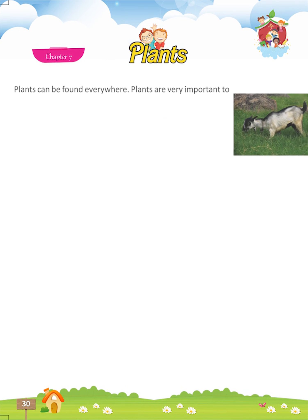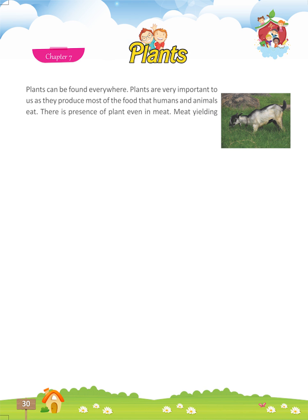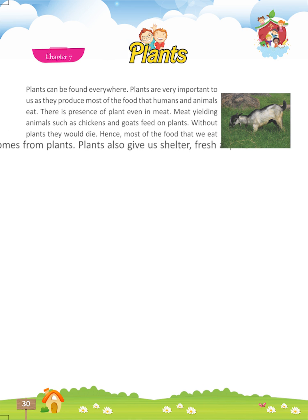Let's start chapter 7: Plants. Plants can be found everywhere. Plants are very important to us as they produce most of the food that humans and animals eat. There is presence of plant even in meat — meat-yielding animals such as chickens and goats feed on plants. Without plants they would die. Hence, most of the food that we eat comes from plants.